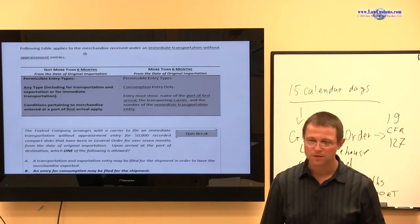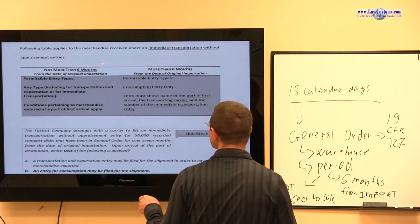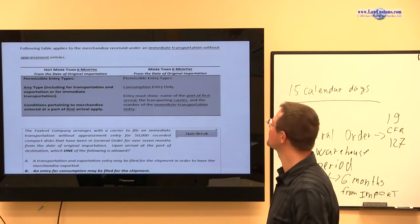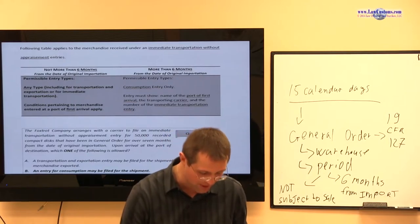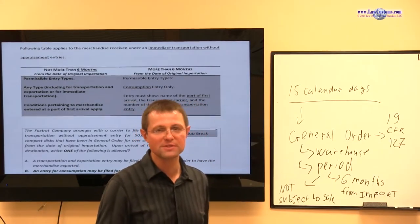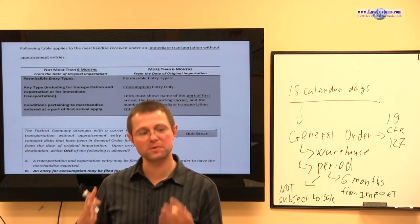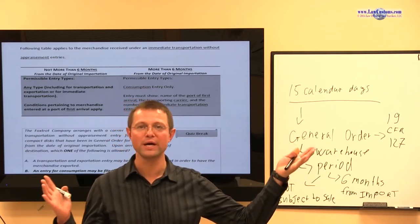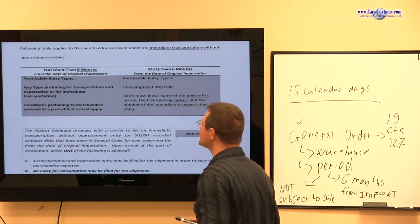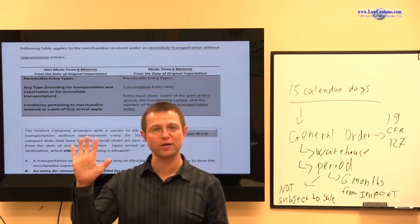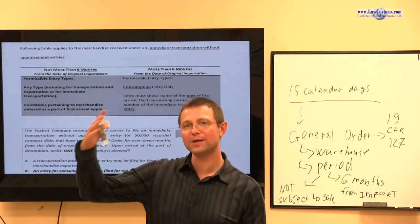And then, of course, any sum due to satisfy a lien of freight, charges and contribution in general average, which may not be applicable. So, what does that mean? That means that after six months, the general order merchandise can be disposed of through auction sale by customs. And the proceeds of the sale will go in to cover all those expenses, which will be plentiful. So, now, we have some idea about six months, right? We know where six months comes from. But let's look at the table, right? So, we have stuff in general order. If it is less than six months, not more than six months, less than six months, then you can get the stuff out of the country.